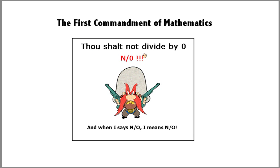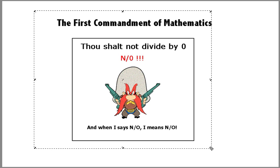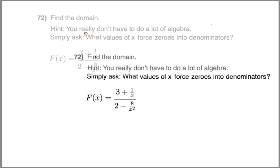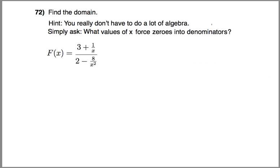And essentially it says, thou shalt not divide by zero. That's a no-no. And that idea pervades any course in mathematics, and it is essential for this problem in chapter 6, dealing with rational expressions and functions. This is problem 72 from section 6.3.